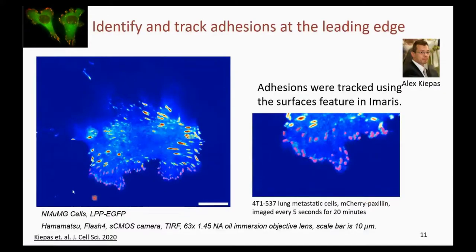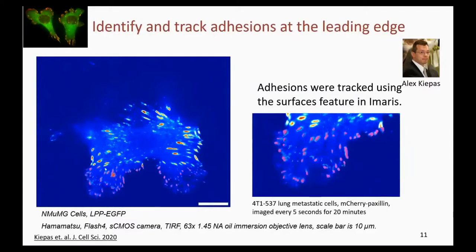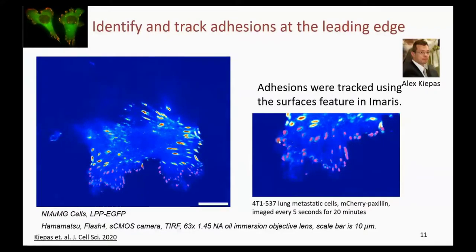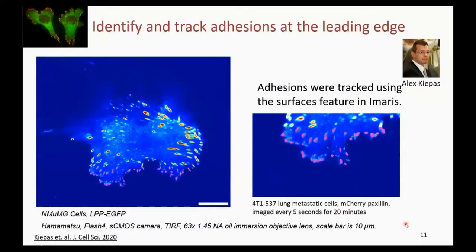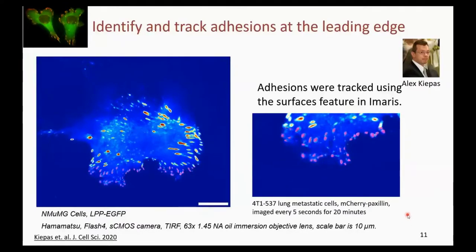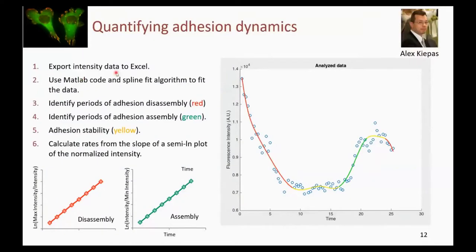To identify and track adhesions at the leading edge, we used the Imaris Surfaces feature to identify adhesions, track them over time, and measure their intensities. From those intensities we can measure adhesion dynamics. To quantify, we export intensity data to Excel and use custom MATLAB code developed by Alex Kipas to identify disassembly, stability, and assembly events. From a semi-log plot we calculate the rates of disassembly and assembly.